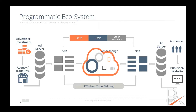Looking at the ecosystem from left to right, the process from the buy side starts with the advertiser investment. They hand that over to the agency trade desk, which through an ad server traffics their media — creatives, banners, videos, etc. That is then uploaded to the DSP, which is the platform actually connected to the ad exchange. The ad exchange is where most of the inventory is available in different sizes, formats — mobile, desktop, video, everything.